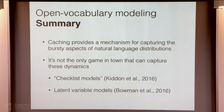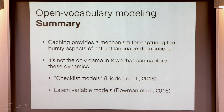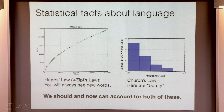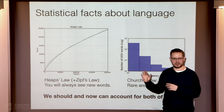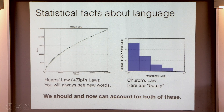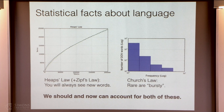There are other things — checklist models, latent variable models representing the whole intention of what you want to say — that can do this. Going back to the statistical facts we started with: we can model this, we should. Don't just ignore the long tail of the linguistic distribution. There's interesting stuff out there. We can do this.